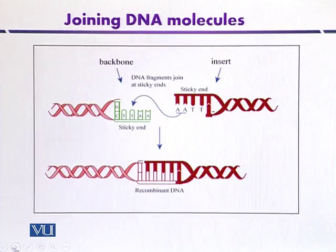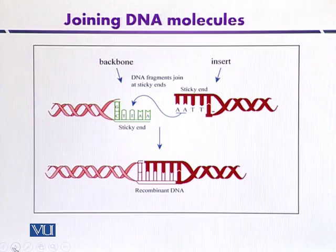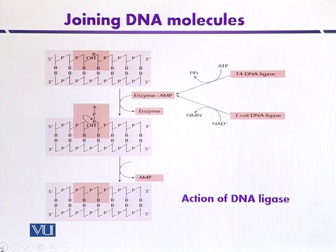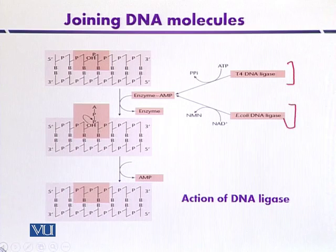This diagram indicates how cohesive or sticky ends anneal and are finally ligated. Here the DNA is digested with EcoR1, so the sticky ends have single-stranded ends of TTAA or AATT. These can anneal, and the gap produced is bridged by the activity of DNA ligase. Another diagram indicates the action of T4 DNA ligase and DNA ligase isolated from E. coli.